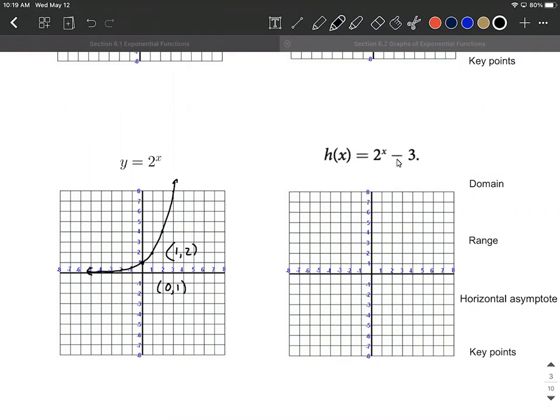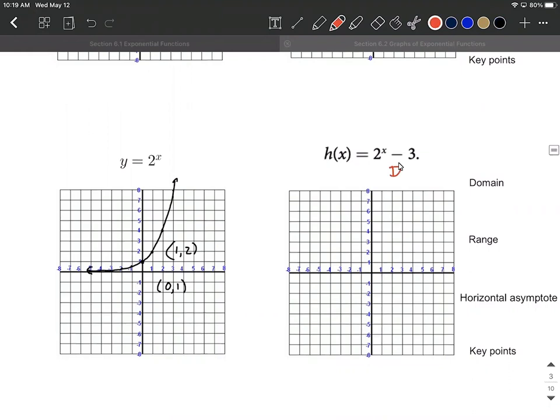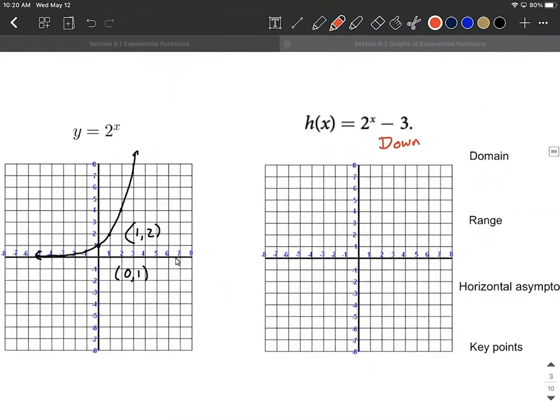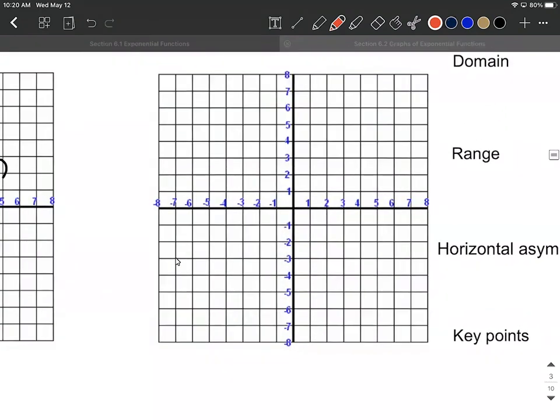All right, in this case, what's happened is we have a 3 being subtracted from the entire function. So that's going to be a vertical shift. In this case, it's going to move everything down 3 units. So again, the three things to track around, the horizontal asymptote and these two key points. First of all, that horizontal asymptote was at the x-axis at 0. It's been moved down 3 units, so I'm going to indicate that with a dashed line going across here at negative 3.